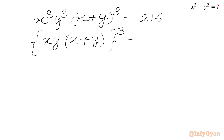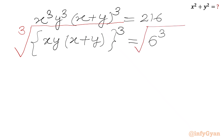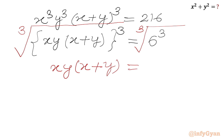We know that 216 is 6³. Now for real values of x and y, once we take the cube root of both sides, we get xy·(x+y) = 6, as the cube root and the power 3 cancel from both sides. We will call this equation number 3.